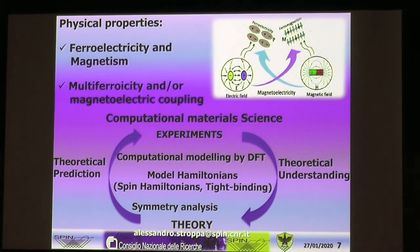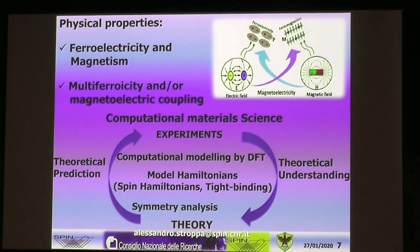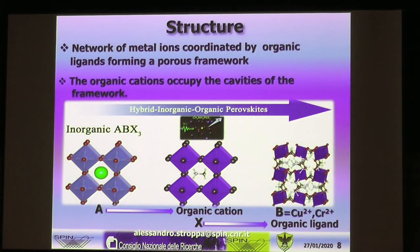This is essentially computational materials science. We can start from experiments and work through theoretical understanding using DFT calculations, complemented with model Hamiltonians — spin Hamiltonians or tight-binding analysis — and symmetry analysis. We end up with theoretical understanding of experimental facts, or we can even predict properties and ask for experimental confirmation.